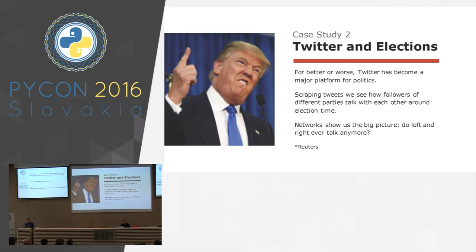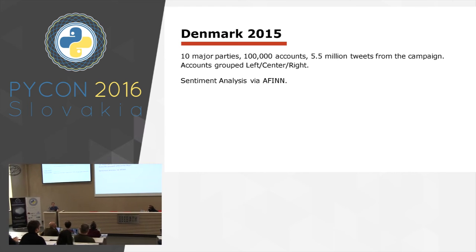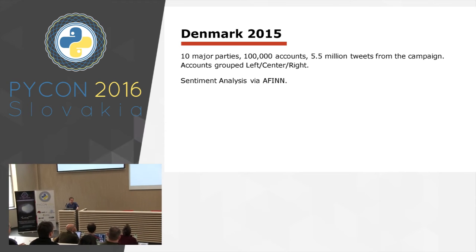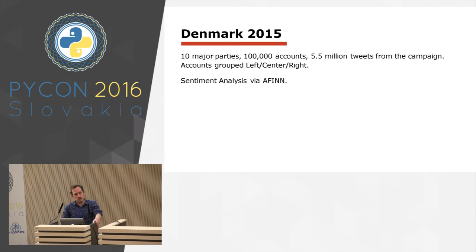The second case study is about the guy who's been in the news — I made this slide a year ago thinking it would be a throwaway slide, but he's stuck with us. Twitter has become a major platform for politics. By scraping tweets from the API, we see how followers of different parties talk with each other around election time. This is a social scientific question — you can test many hypotheses this way. Networks show us the big picture: do people on the left and right ever talk with each other directly anymore? The specific case is Denmark in 2015 — ten major parties, conveniently five on the left and five on the right, about a hundred thousand accounts following these parties, and over five million tweets from just before the campaign, during the campaign, and after the government was formed.